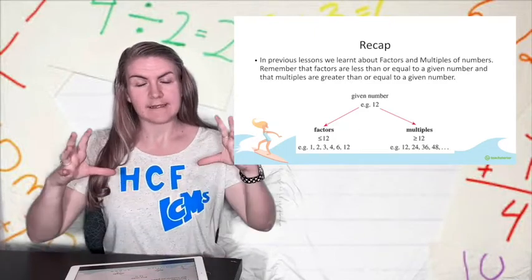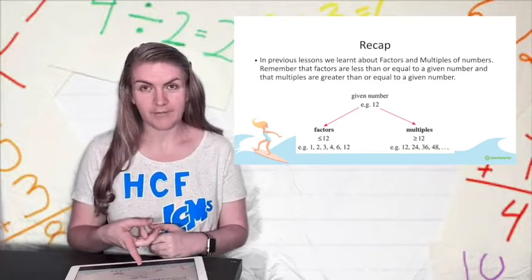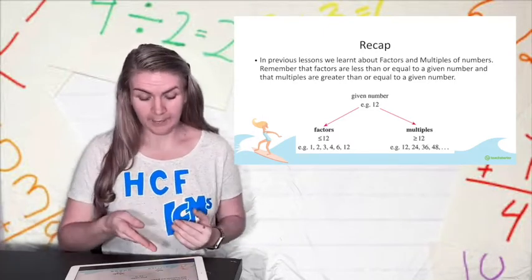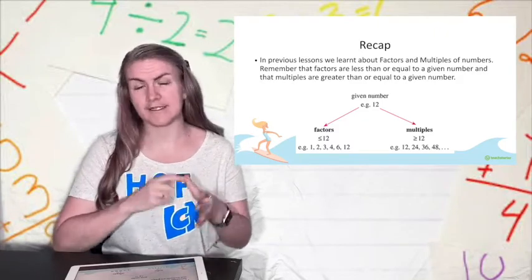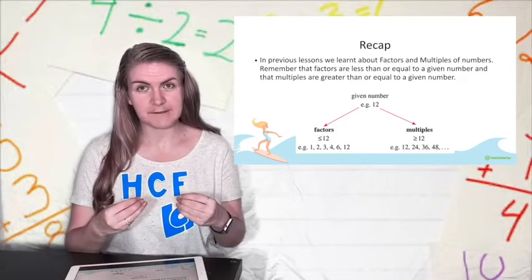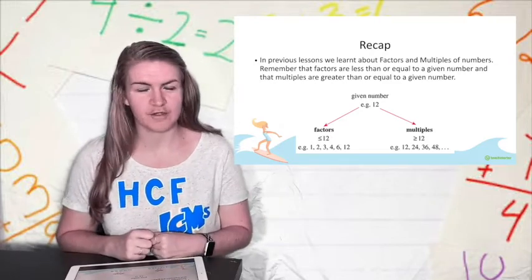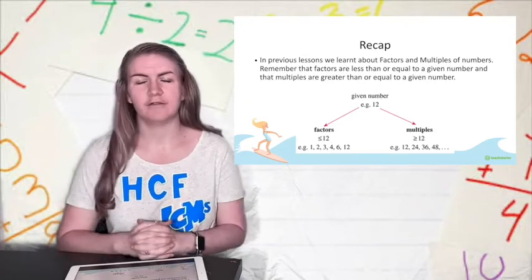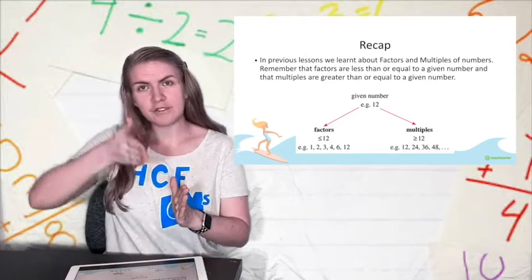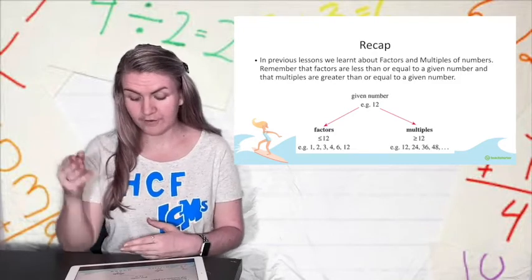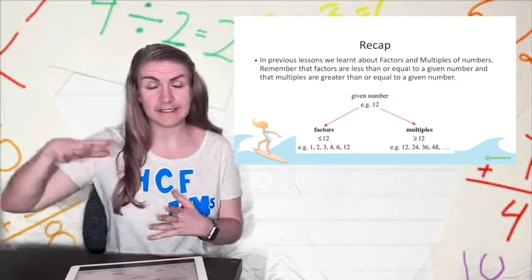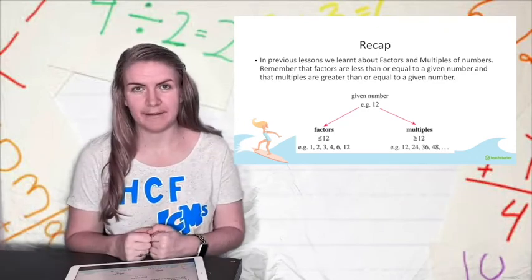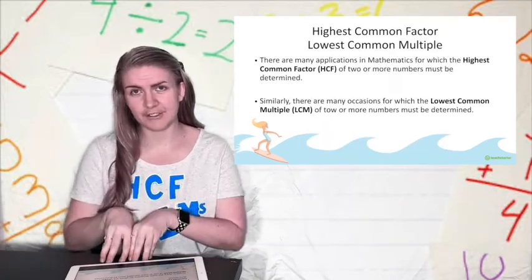Remember that factors are always less than our number. So here my given number is 12, so factors are always going to be equal to or less than 12, and we have the numbers 1, 2, 3, 4, 6, and 12. Those are all factors because they fit inside of 12 and they're smaller than 12. And then remember multiples are the same size or larger than your number because they multiply up. So here we have examples 12, 24, 36, 48, and it continues for infinity.